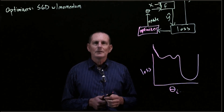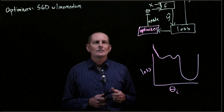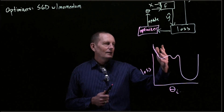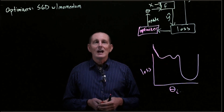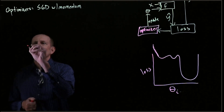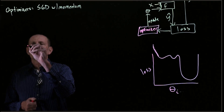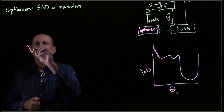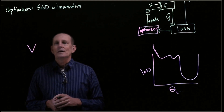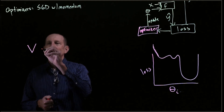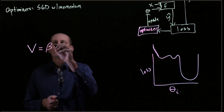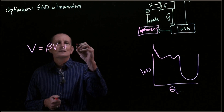Momentum is used for two things: to accumulate velocity, and to dampen oscillations. Momentum works basically like this — we take our gradient and use it to not directly update theta, but instead to update some v, which is our velocity. So we do something like v equals beta*v plus our gradient.